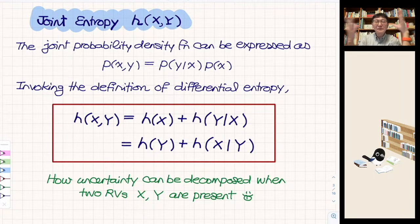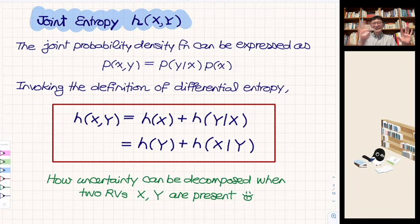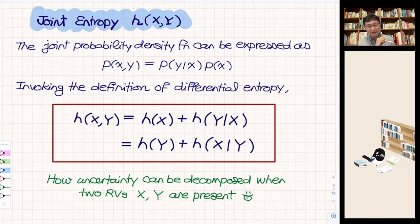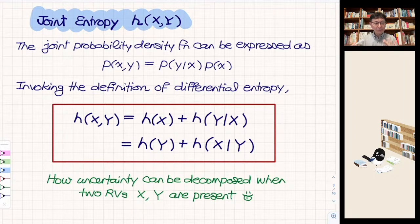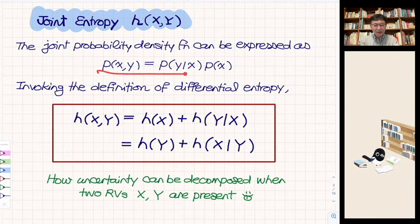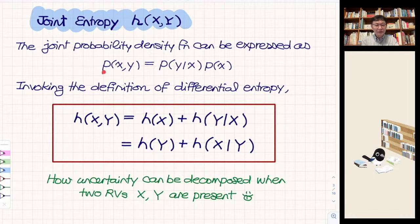In previous videos we learned how to quantify the information conveyed per message for a single random variable. What happens if you have two random variables — this input and this output? Let's go back to probability theory. We have the joint probability density function p(X,Y), and remember that p(X,Y) can be written as a product of conditional probability: the probability that X occurred times the probability that Y occurred given X.